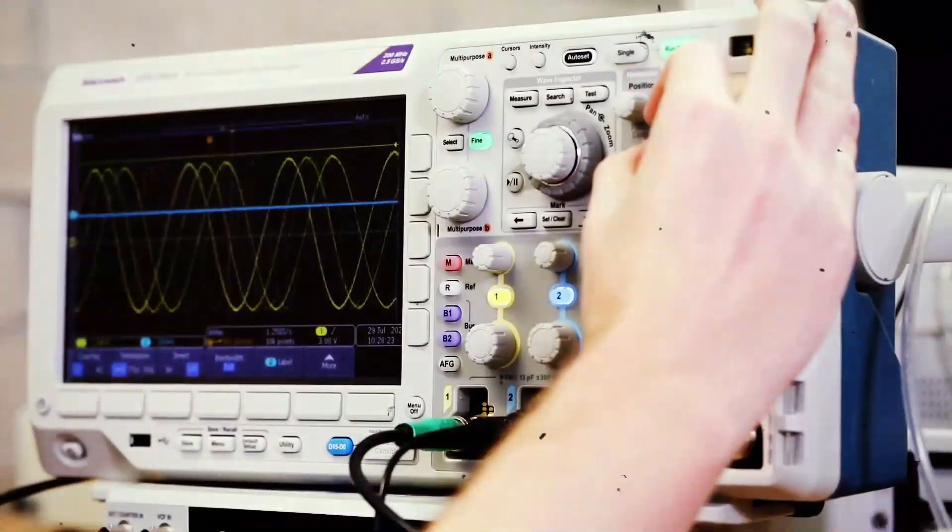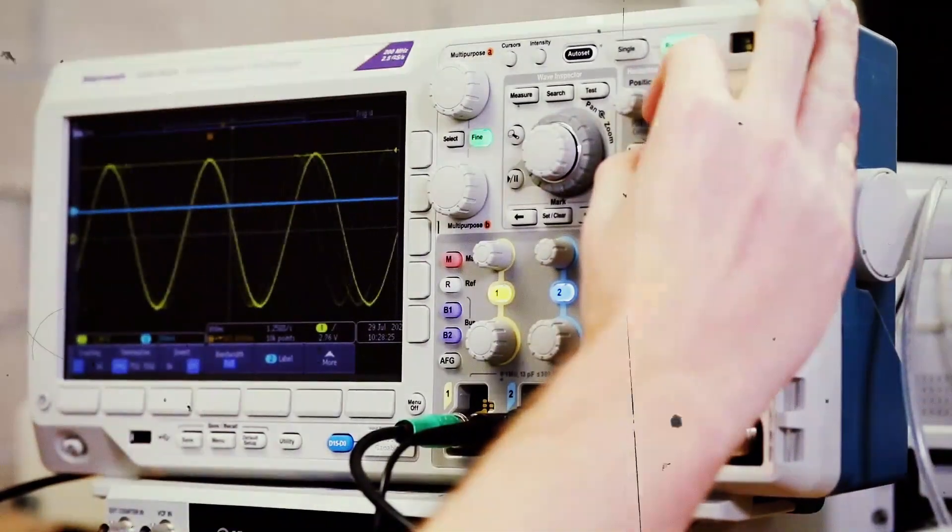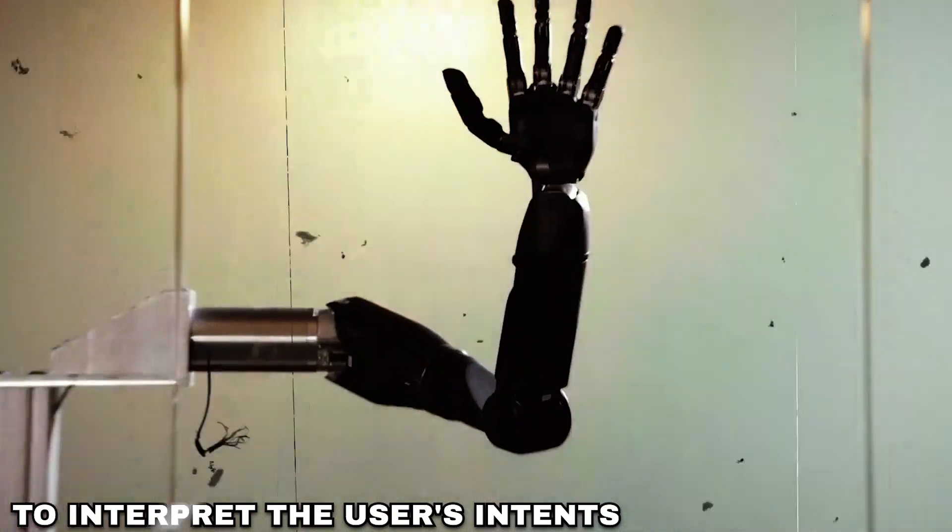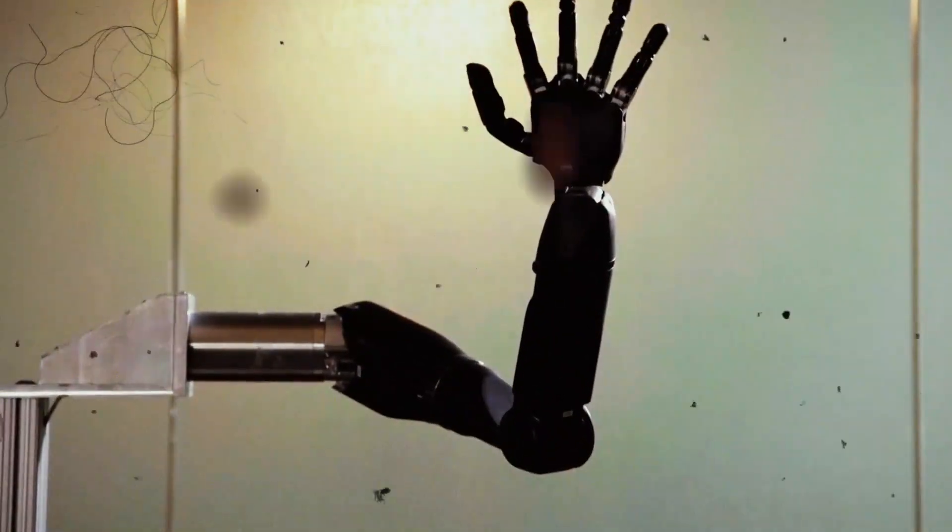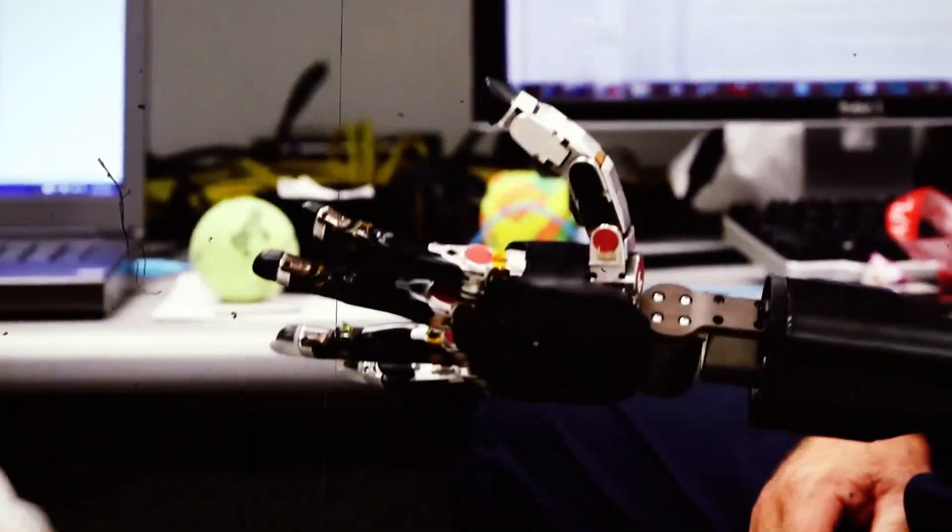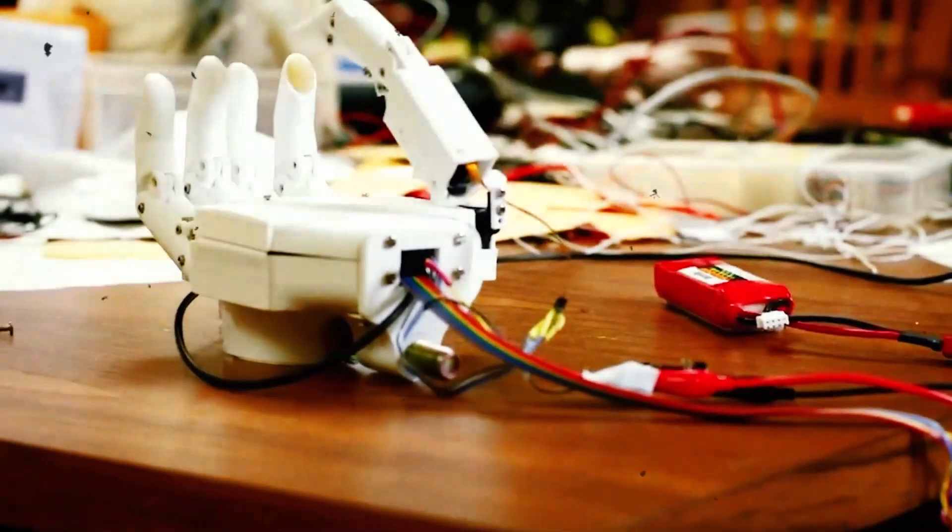After receiving these electrical signals, an artificial intelligence system uses sophisticated algorithms to interpret the user's intents. The Bionic Arm may move in response to the user's intended activity since the AI system converts the precise ideas into commands.